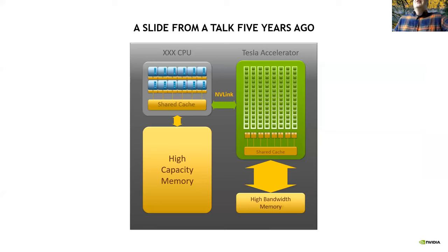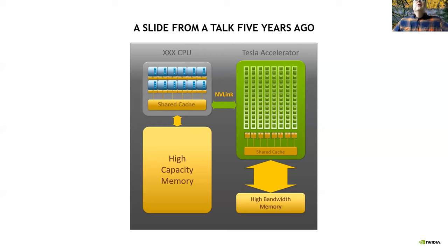I've given these talks for 12 years or so. From about five years ago, when the Coral systems were first introduced, we used to show this slide. On the left is the CPU, whether it's an x86, Power, or ARM, and it's got a handful of cores. That's probably more cores now than it was five years ago, maybe doubled to 40 or 64.